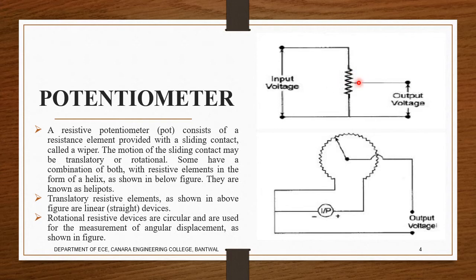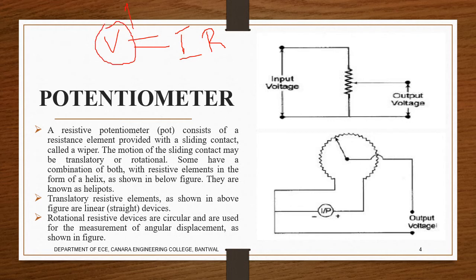The sliding contact — the wiper — is usually placed in the middle so it stays stable between high and low potential, at a medium level. Remember: V = I × R. When the sliding contact is moved, the resistance increases or decreases accordingly, as voltage and resistance are proportional.